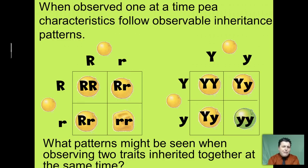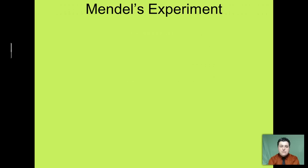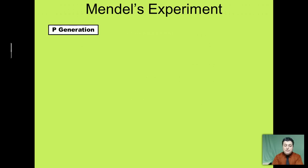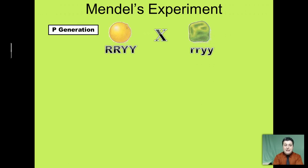Mendel wondered what patterns he might see if he looked at two traits being inherited at the exact same time. To observe this, Mendel set up an experiment. First, he needed some purebred varieties. Using a self-pollination technique, Mendel created his purebred pea generation — purebred yellow and round, and purebred green and wrinkled. They only have yellow and round genes, or only green and wrinkled genes.